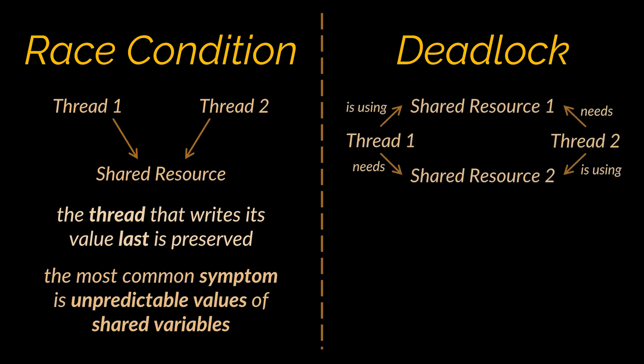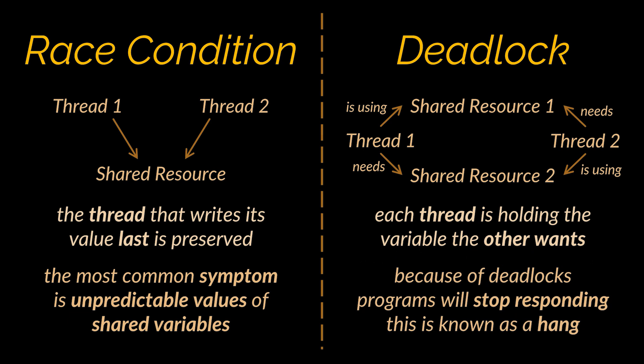A deadlock occurs when two threads each lock a different variable at the same time and then try to lock the variable that the other thread already locked. As a result, each thread stops executing and waits for the other thread to release the variable indefinitely because each thread is holding the variable that the other thread wants. Nothing occurs and the threads remain deadlocked. A common symptom of deadlocks is that the program or group of threads stops responding, also known as a hang, where at least two threads are waiting for a variable that the other thread locked.